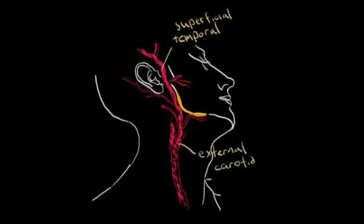This is the angle of the mandible right here, so it crosses behind it. When a patient chews, it can press against the artery and cause pain.